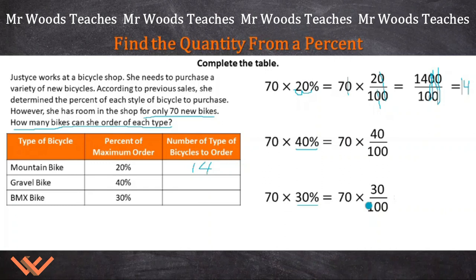Can you determine, just from this, how many gravel bikes there are going to be, and how many BMX bikes are going to be? Just by looking up here. Yes, you can just take off these zeros here, and here, and there, and 7 times 4 is going to be 28, and then 7 times 3 — we're just doing this — 7 times 3, I'm going to say 21 here.